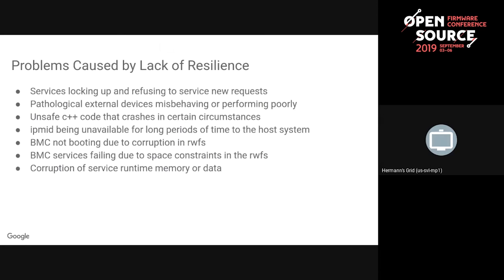What are some problems we have where we don't have resilience in place? If a service locks up and stops making progress, we have no way of servicing new requests. For example, your network settings daemon tries to parse an IPv6 subnet mask, goes into an infinite loop, and now none of the other requests to that daemon can be serviced. That's a huge issue, and it's something a resilience feature could actually solve by restarting that service.